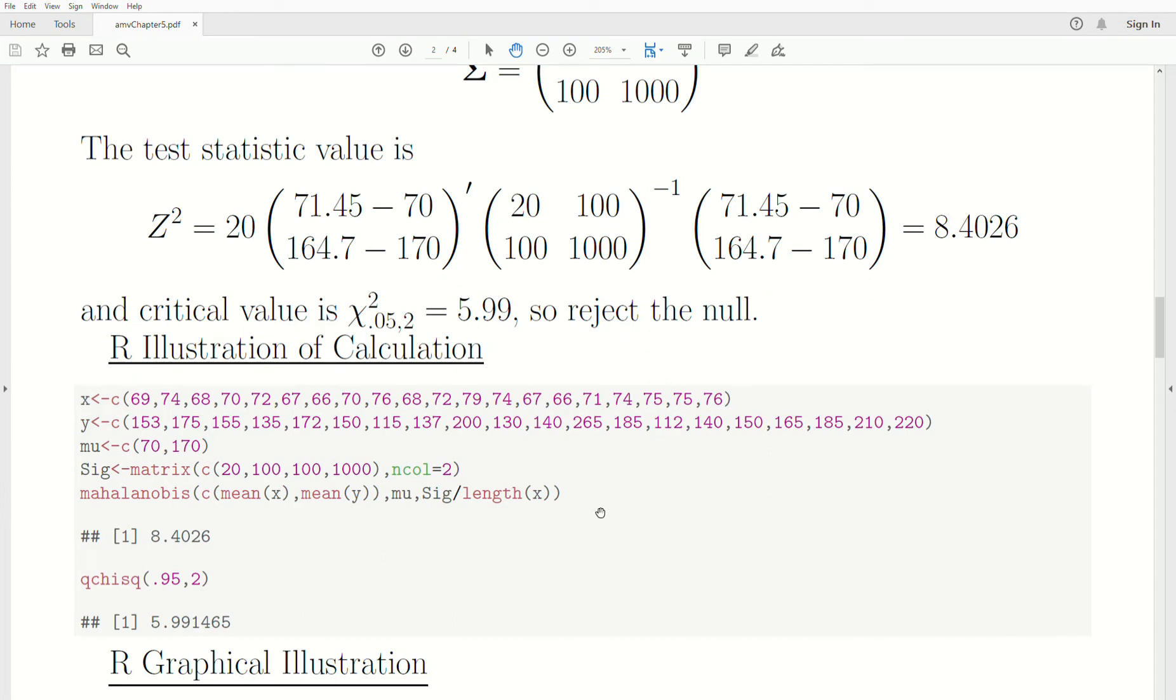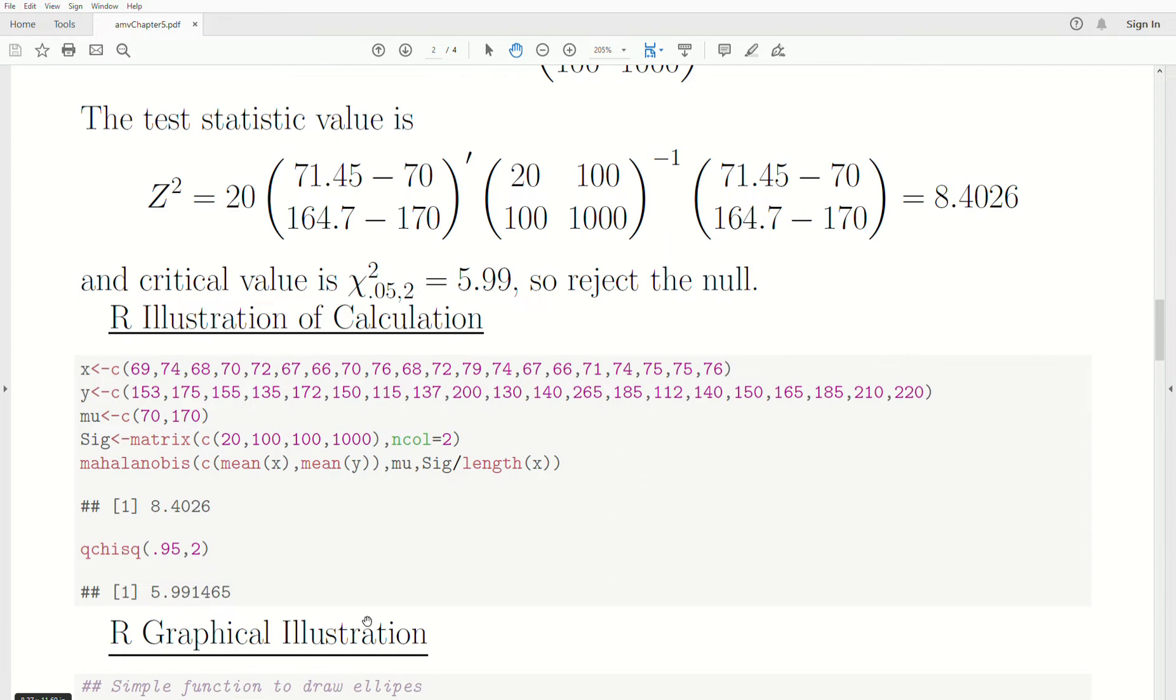Now here's an R illustration of the calculations. And then as you can see, we'll do a graphical illustration of what's going on to get a little deeper understanding. So the X's or the heights is X and Y is the weight of these college students, male college students. Mu is the hypothesized mean value 70, 170.